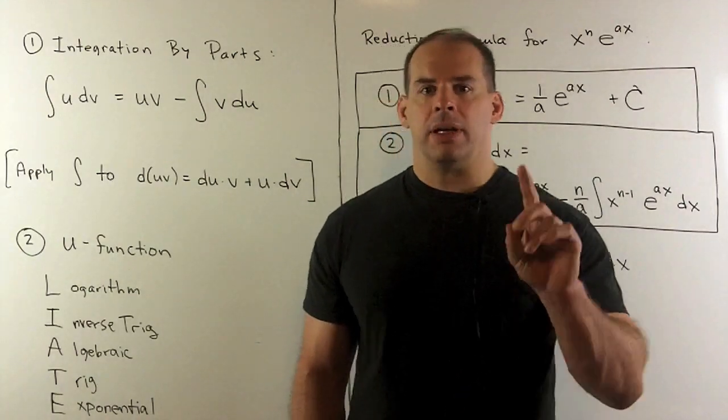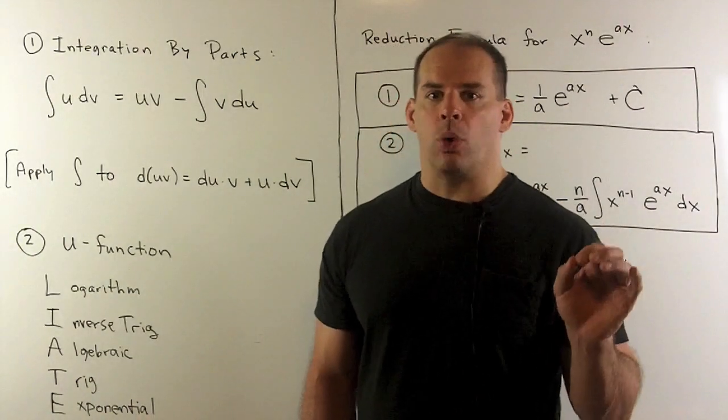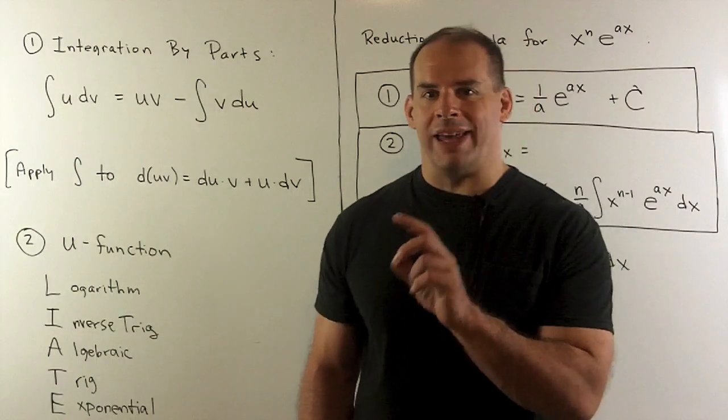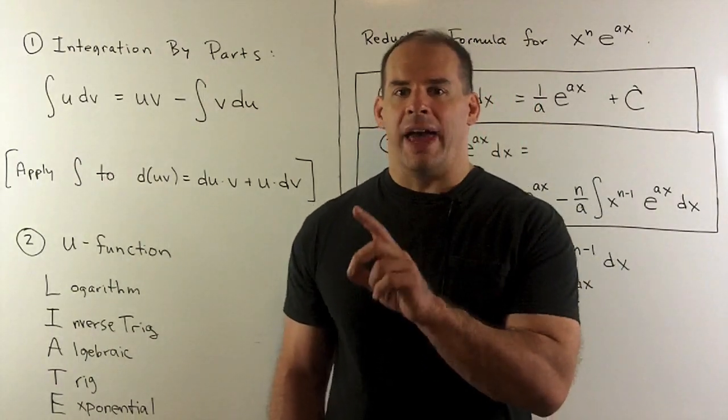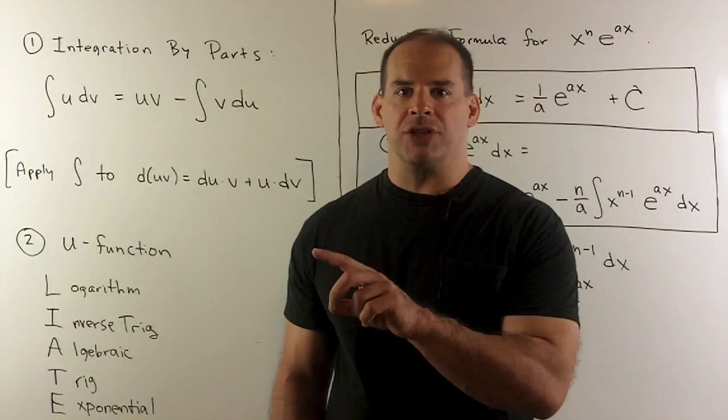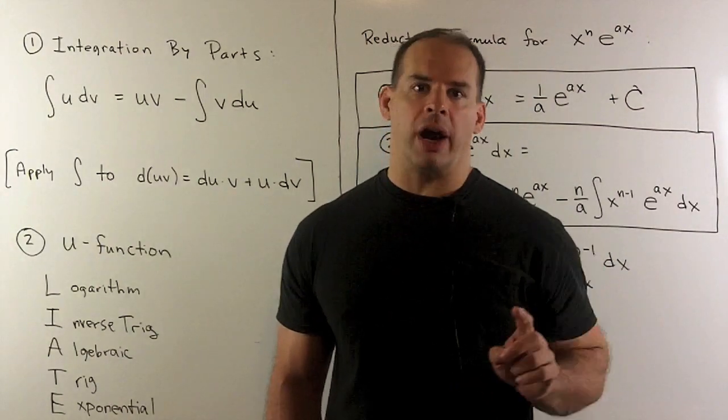Second method, if our integrand is of a certain form, we can partially memorize the answer. Then, if I take the derivative of that partial answer, I get the coefficients by matching to the integrand.